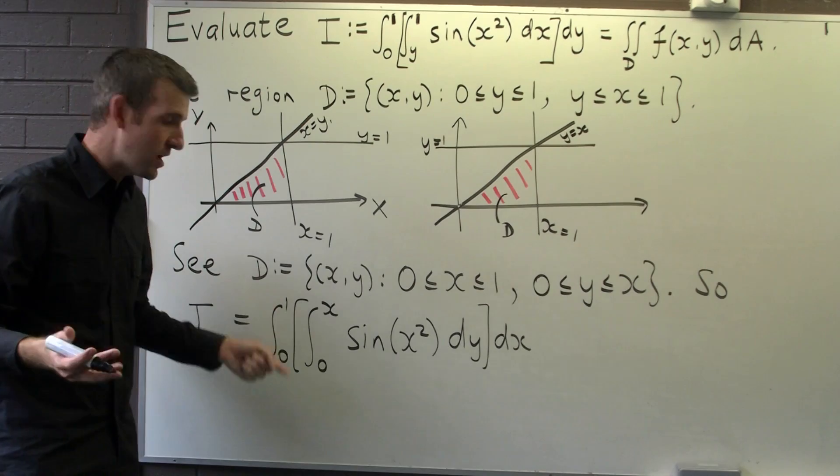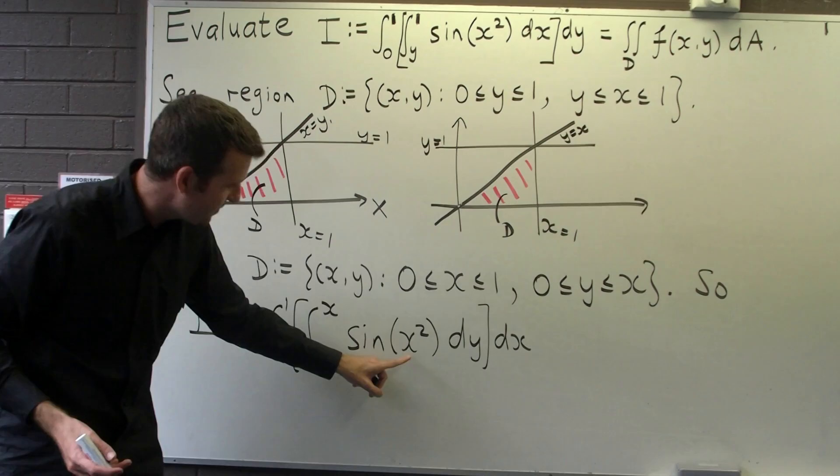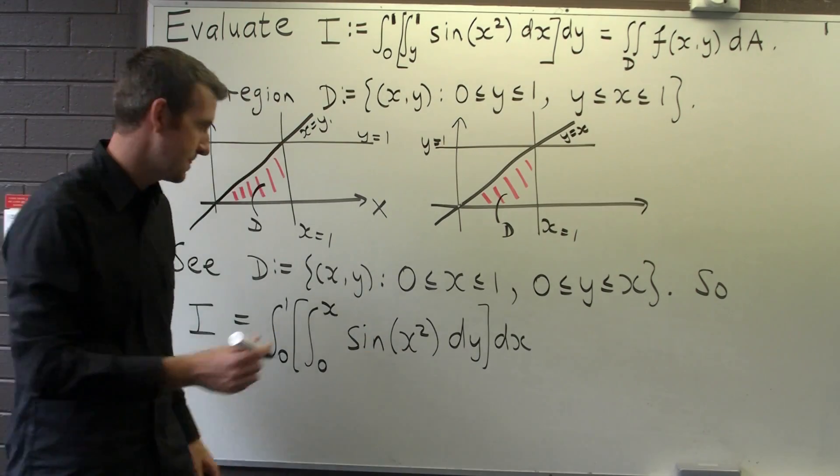Okay, so the normal rules apply. Do the inside integral first. Integrate sine of x squared with respect to y.